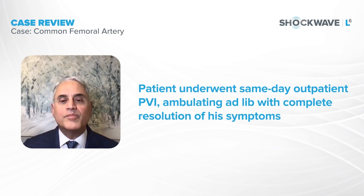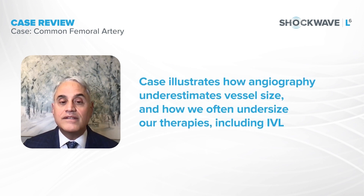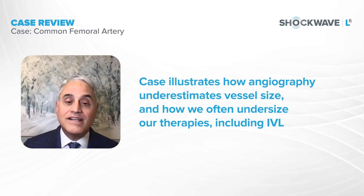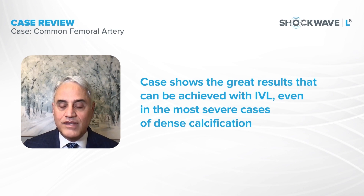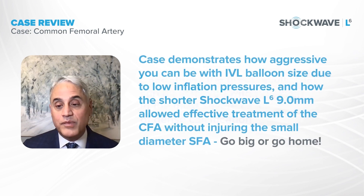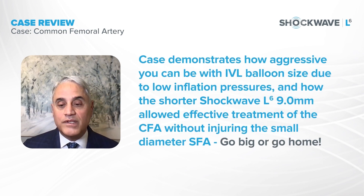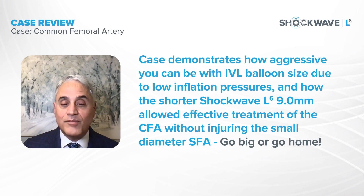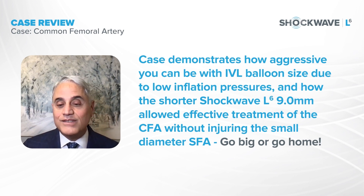There are a couple of really important learning points from this case. Number one: angiography very frequently underestimates vessel size, which means we're probably undersizing our therapy, including IVL. This case also demonstrates the great results achievable with IVL in areas where we don't want a stent, even with very extreme severe calcification. And it shows how aggressive you can be with the shorter L6 balloon — in my wildest dreams I wouldn't have imagined putting a 9-millimeter IVL balloon in his common femoral artery. But we did it without injuring the smaller diameter SFA. As my fellows like to hear me say: when it comes to IVL, go big or go home.